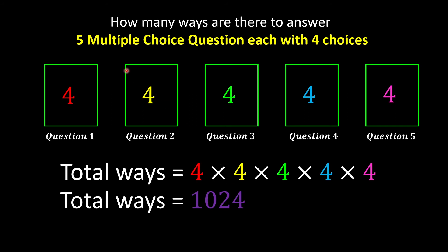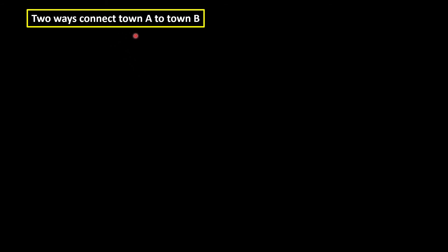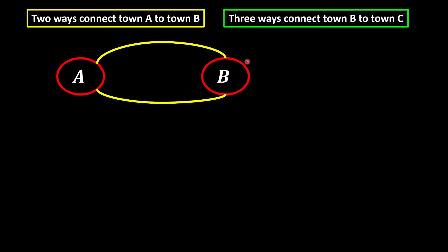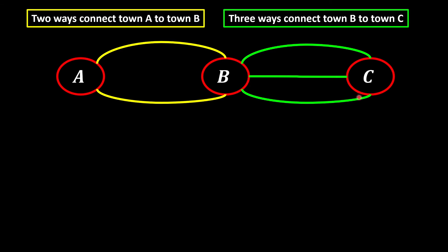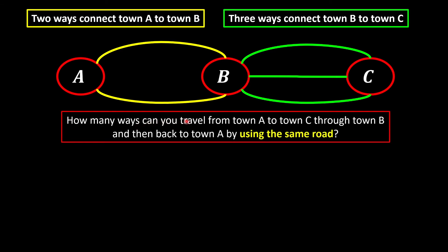Next: we have two ways to connect Town A to Town B, and three ways to connect Town B to Town C. The question is: how many ways can you travel from Town A to Town C through Town B? This means you travel from Town A to Town B to Town C, and then back to Town A again, passing through Town B, using the same road on the return.